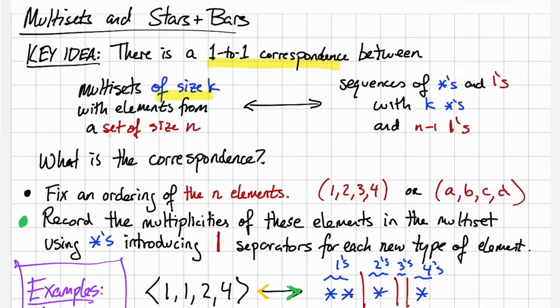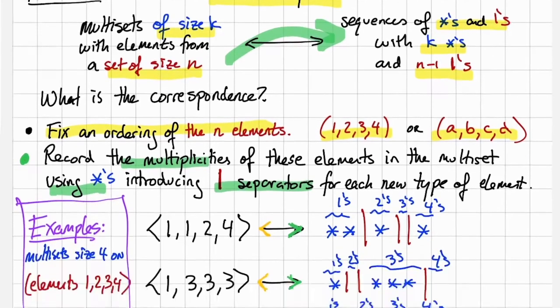And so now what we're going to do is come up with a one-to-one correspondence between multisets of size k with elements from a set of size n and sequences of stars and bars with k stars and n minus one bars. To make this work, we're going to need to fix an ordering of the n elements in the set. And now we want to go in this direction. Let's say we have a multiset of size k with elements from a set of size n. We'll record the multiplicities of these elements in the multiset using stars and introduce bars as separators for each new type of element.